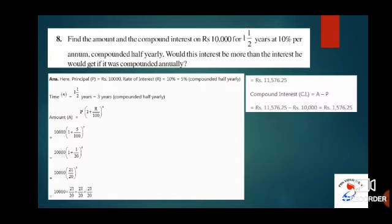Moving to problem number 8: Find the amount and the compound interest on Rs. 10,000 for 1.5 years at 10% per annum compounded half yearly. Would this interest be more than the interest if it was compounded annually? We have to calculate for both annually and half yearly, and find out which gives a higher amount.